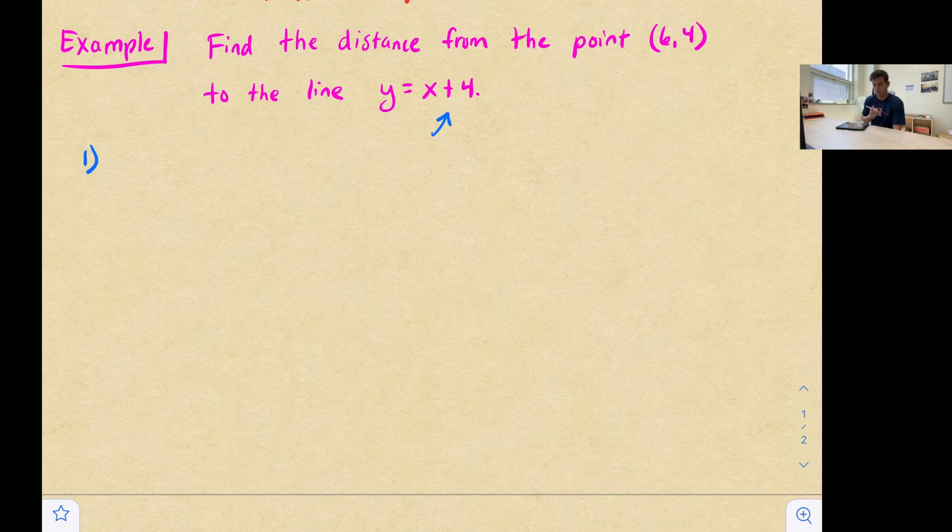All right, so when we talk about perpendicular, the slopes need to be opposite reciprocals. So the slope here on y equals x plus four is one. So if the slope here is one, the opposite of that would be negative one, reciprocal would still be negative one.